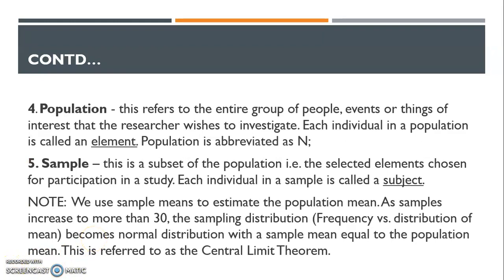The next term we need to define is population. Population refers to the entire group of people, events, or things of interest that the researcher wishes to investigate. Each and every individual in a population is called an element. In research, we do not study the entire group — we normally use a sample. A sample is a subset of the population; that is the group you select from the population who will participate in the study. Each individual in a sample is called a subject.